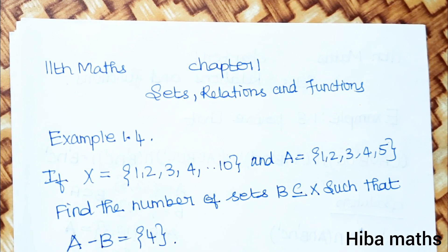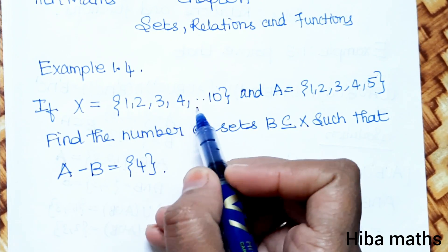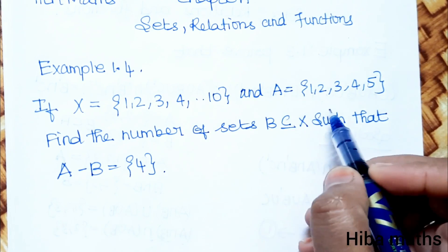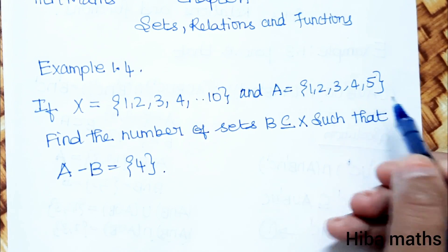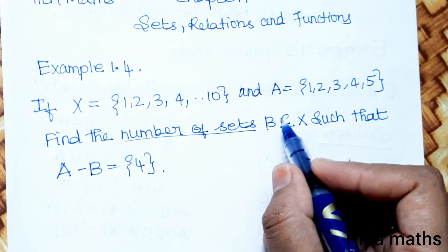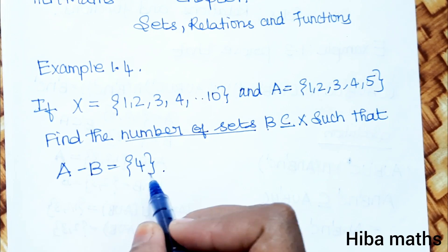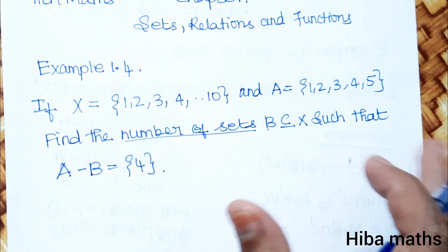Hello students, welcome to Hiba Maths 11th Standard Maths Chapter 1 Sets, Relations and Functions Example 1.4. If X is equal to {1, 2, 3, 4 up to 10} and A is equal to {1, 2, 3, 4, 5}, find the number of sets B which is a subset of X such that A minus B is equal to {4}.